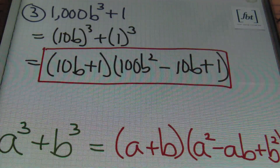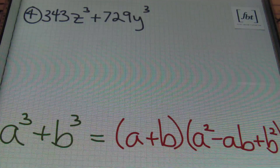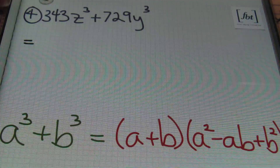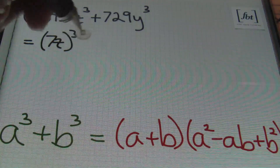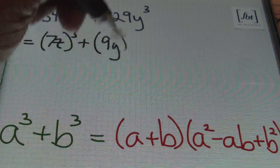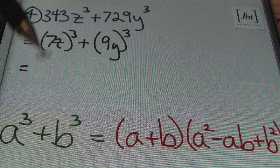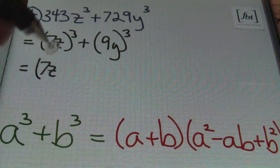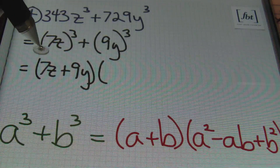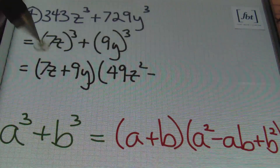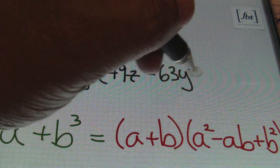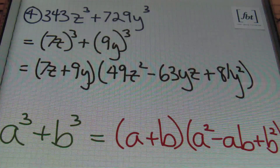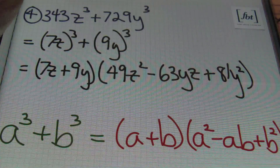Problem number four: 343z cubed plus 729y cubed. We rewrite as (7z)³ + (9y)³, so a = 7z and b = 9y. Plugging into the formula: (7z + 9y)(49z² − 63yz + 81y²). Remember, the trinomial is always going to be prime, so you don't need to continue factoring it. We're done.